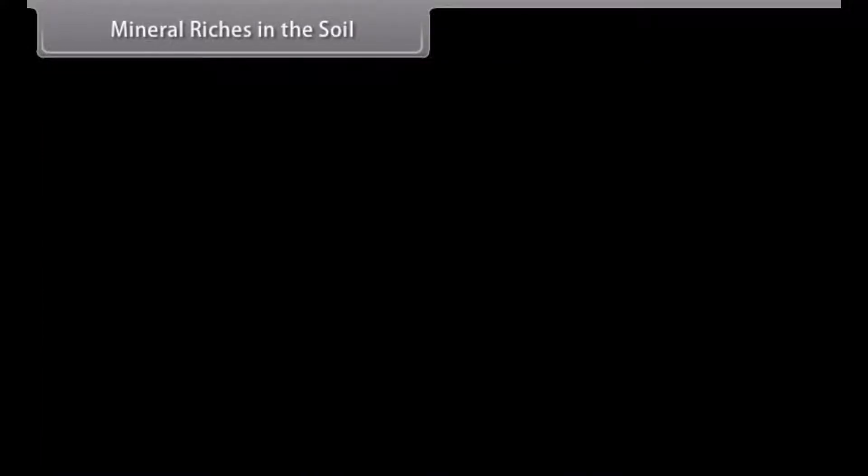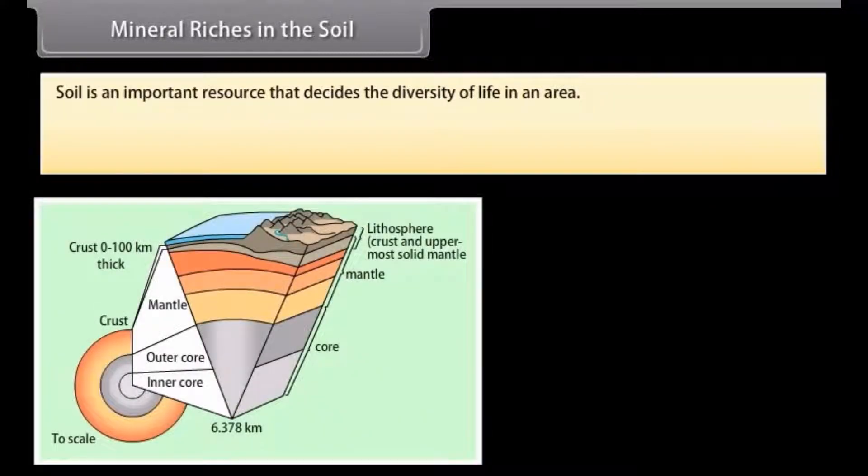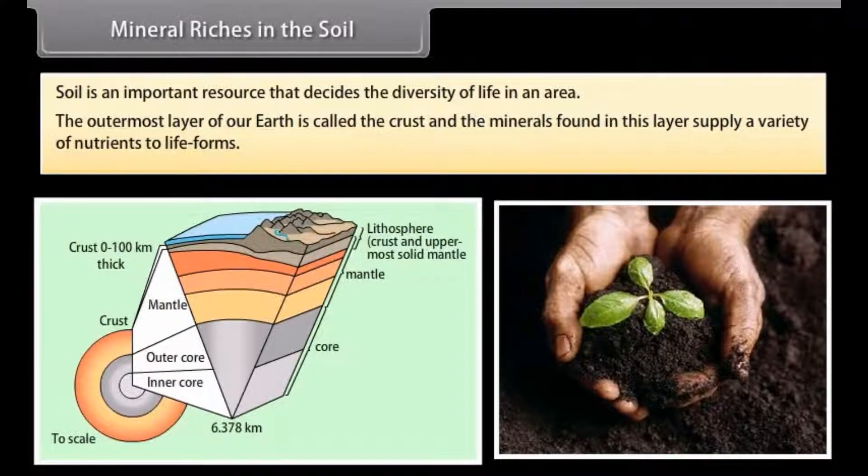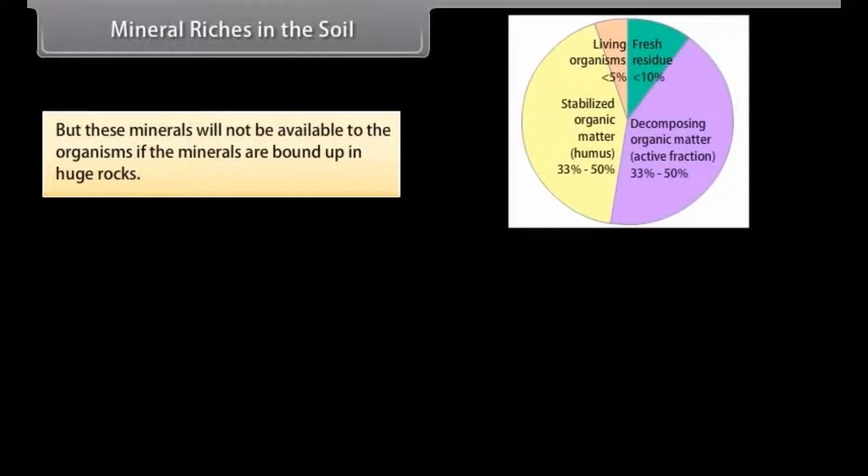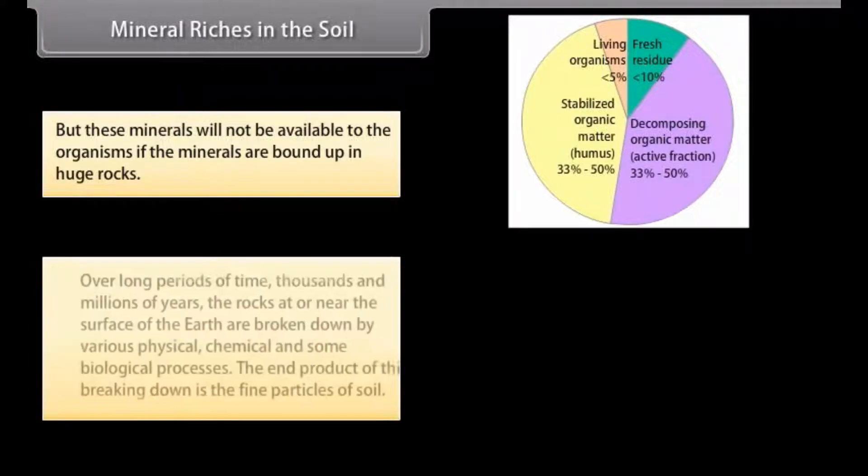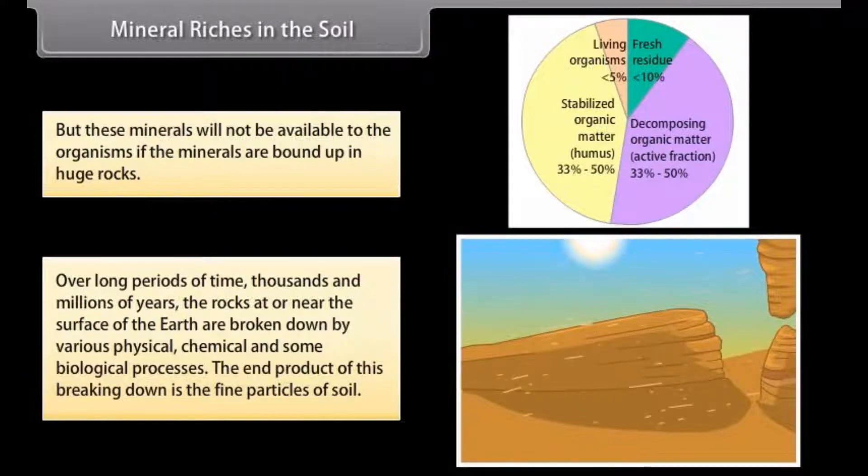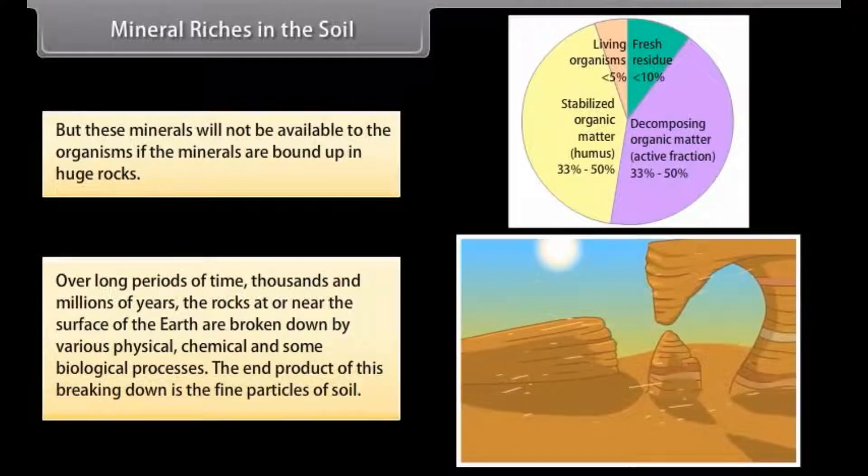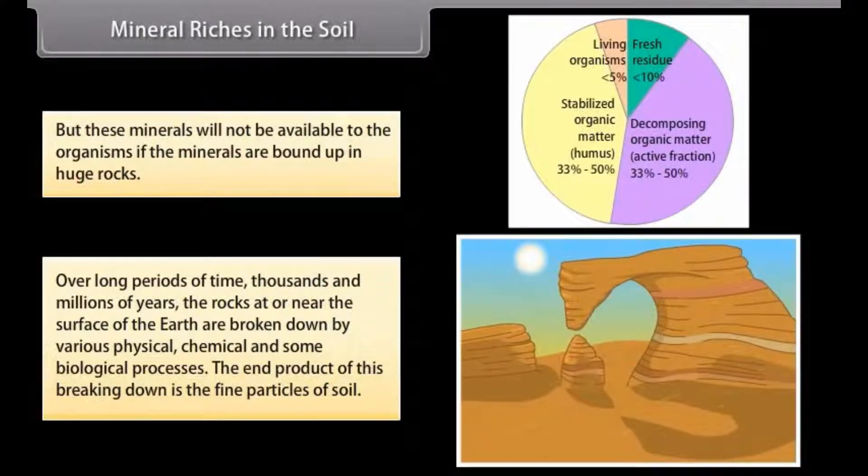Mineral riches in the soil: Soil is an important resource that decides the diversity of life in an area. The outermost layer of our earth is called the crust and the minerals found in this layer supply a variety of nutrients to life forms. But these minerals will not be available to organisms if they are bound up in huge rocks. Over long periods of time, thousands and millions of years, the rocks at or near the surface of the earth are broken down by various physical, chemical, and some biological processes. The end product of this breaking down is the fine particles of soil.